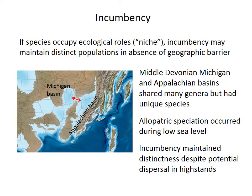For example, in the Devonian there are two basins — the Michigan Basin and Appalachian Basin — that are geographically nearby and share many genera in common, but they often have unique and distinct species in each location. When sea level was low, these two basins were separated by a barrier allowing allopatric speciation. But even when sea level rose and connections formed that could allow dispersal, species distinctiveness was still maintained, perhaps by incumbency. So the existing species in the community are the incumbents, and they may persist and reduce or prevent immigration and evolution until some environmental disruption removes them and allows new species to take over.